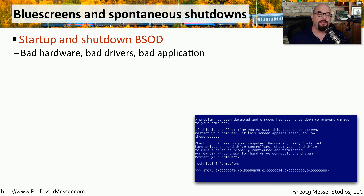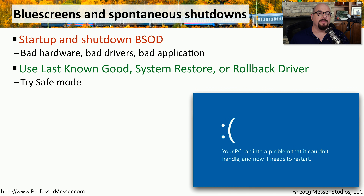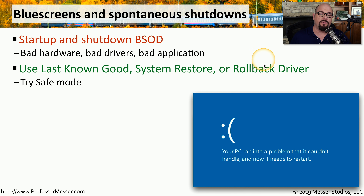If you're working on your computer and everything stops with an error message, you've run into a Windows stop error — often called the blue screen of death because of its blue color. It shows a lot of information and the only way to recover is to reboot. Newer versions of Windows show a gentler blue screen, but the problem is the same: a fatal error caused by hardware, drivers, or an application has caused the entire operating system to stop. If the problem is related to a recent change, you may want to roll back to a previous version using last known good configuration, system restore, or rollback driver.